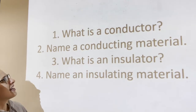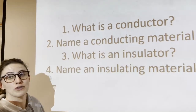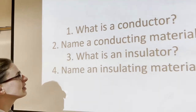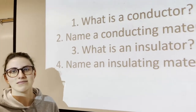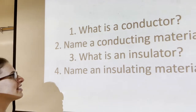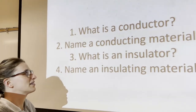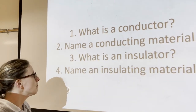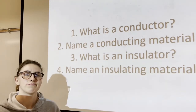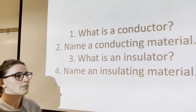A conductor is something that allows electrons to flow — electrons move freely. Name a conducting material: it could be any sort of metal. All metals are conductors. An insulator is the opposite of a conductor — it does not allow electrons to flow freely. Examples of insulating materials include rubber, plastic, glass, ceramic, or carpet.